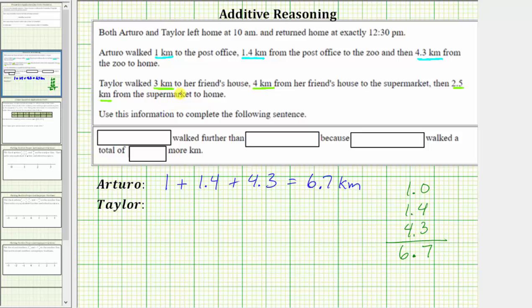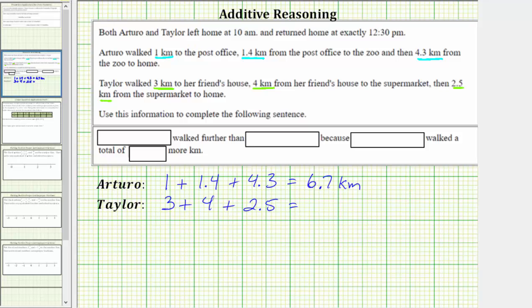Taylor walked a total of three kilometers plus 4 kilometers plus 2.5 kilometers. Again, to determine the sum, let's write the sum vertically lining up the corresponding place values. Let's write three as 3.0, so we have 3.0 plus 4.0 plus 2.5. Bring the decimal point down to the sum and add corresponding place values. Zero plus zero plus five is five.